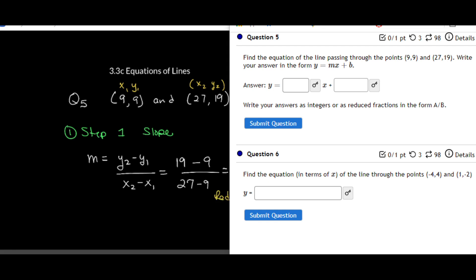You can see right there make sure you write your answer as an integer or reduced fractions in terms of one number over another. So both the 10 and the 18 are divisible by 2, so that leaves me with 10 divided by 2 is 5, and 18 divided by 2 is 9. So that tells me my slope is equal to 5 over 9.